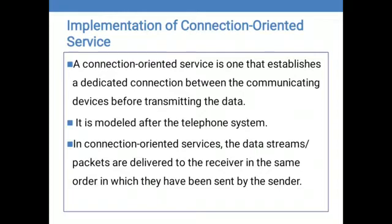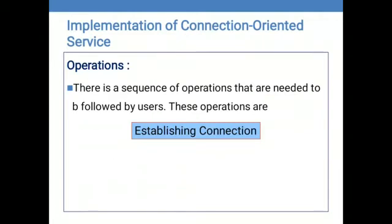The order is maintained in connection-oriented service, so whatever order the sending device follows, the data packets are received at the receiver side in the same order. The operations performed on connection-oriented services are of three different types. For data transmission using connection-oriented service, we need to follow three different operations performed sequentially. The first one is establishing a connection.